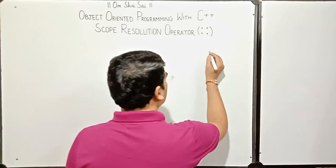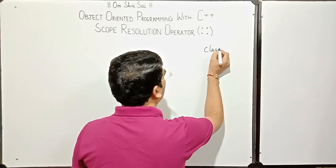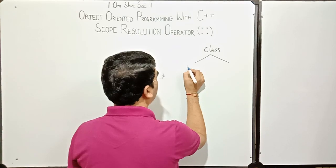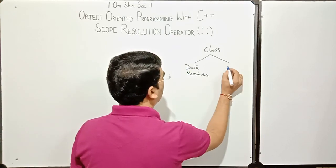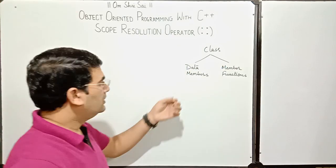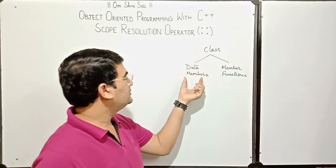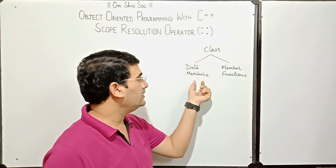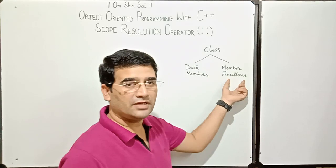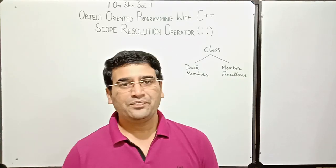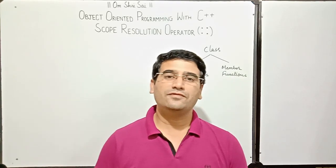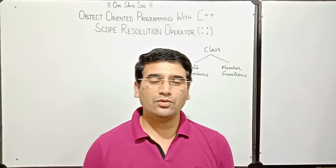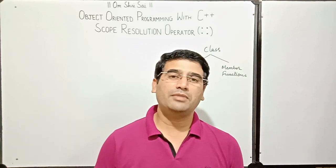Any class may have two different types of members. One is data members and another is member functions. The data members in the class specify the properties or characteristics of that class, and the member functions specify the behavior of that class. Abstraction refers to the act of representing the important properties of a class without including their background details.